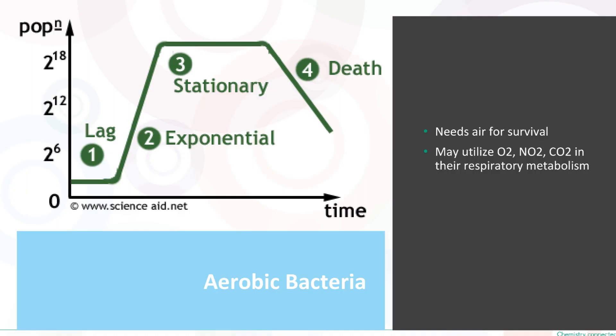Number one is called aerobic bacteria. These are the types of bacteria which require oxygen to grow. Without oxygen, these bacteria cannot survive. They consume CO₂ and nitrides for their respiratory metabolism. Nitrifying bacteria, denitrifying bacteria, and iron bacteria are a few examples of aerobic bacteria. These bacteria can be tested through TBC dip slides easily.